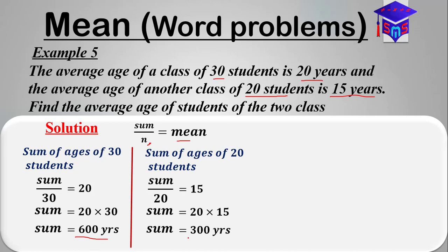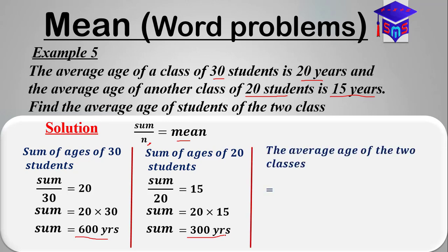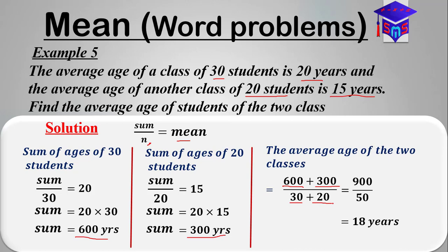Now that we have both sums, we can find the average age of all 50 students. The average age of students in the two classes equals the sum of the ages of the 30 students plus the sum of the ages of the 20 students, divided by 30 plus 20. That is 600 plus 300 over 50, which equals 900 over 50, simplifying to 18 years. The average age of the 50 students is 18 years.